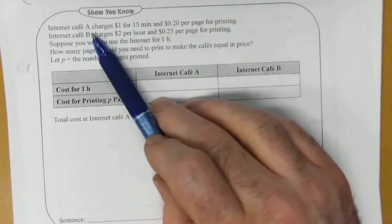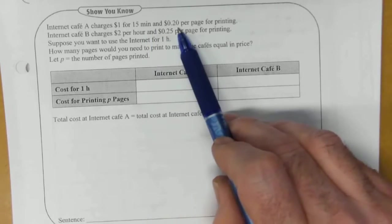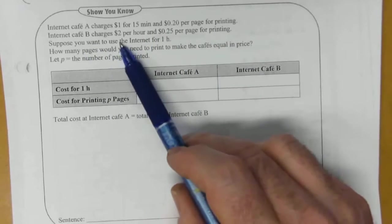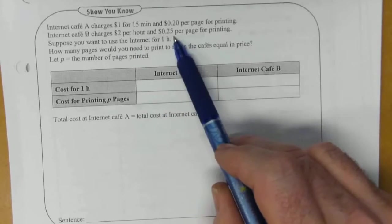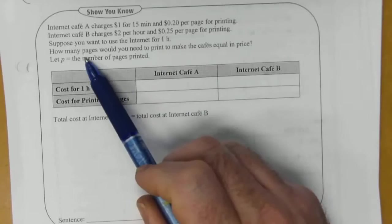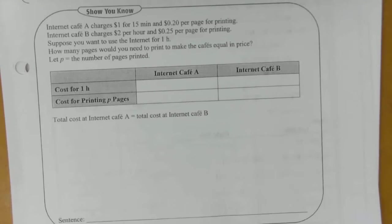Now we've got an internet cafe A and B. A charges a dollar for 15 minutes and 20 cents per page for printing. B charges two dollars per hour and 25 cents per page for printing. Suppose you want to use the internet for one hour. How many pages would you need to print to make the cafes equal in price? Let P equal the number of pages printed.